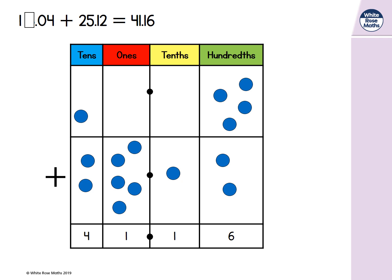So to be left with 1 one, we need to add 6 ones. Now we can exchange 10 ones for 1 ten. So the missing digit was 6.